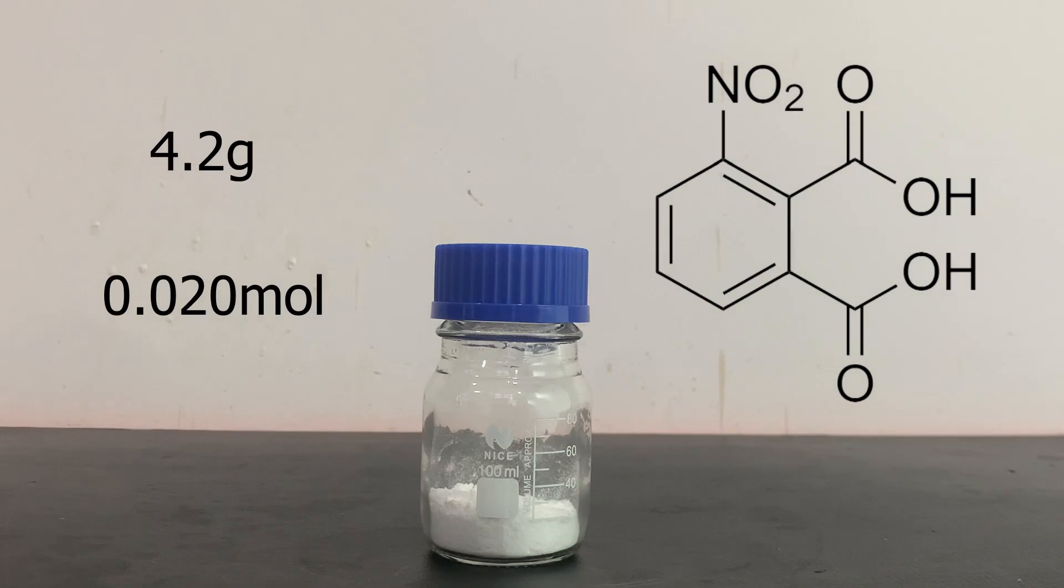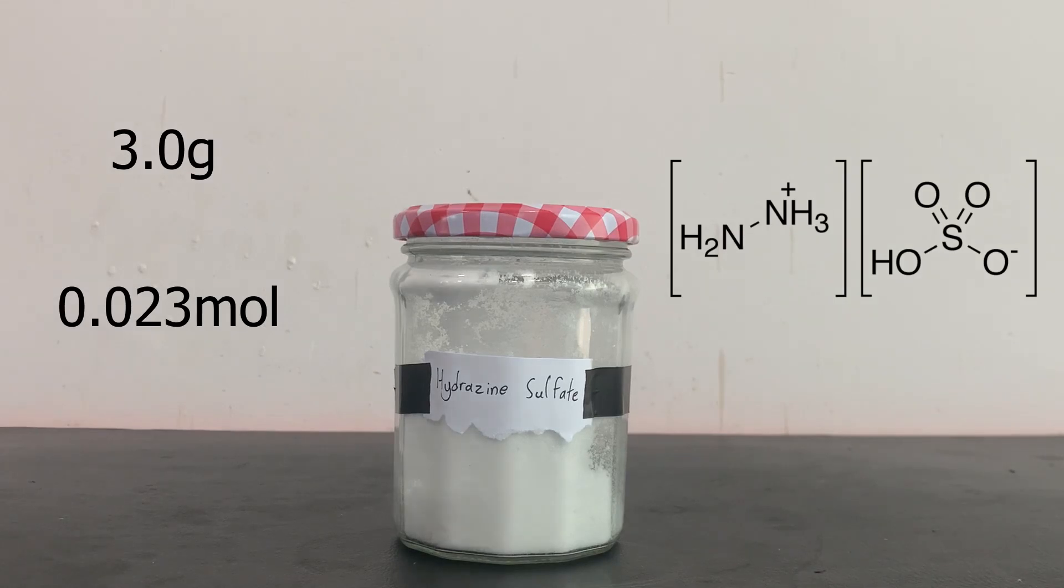For the chemicals required in this synthesis, we will need 4.2 grams of 3-nitrophthalic acid, which I have shown how to make in a previous video, and 3 grams of hydrazine sulfate, which I have also shown how to make in a previous video.